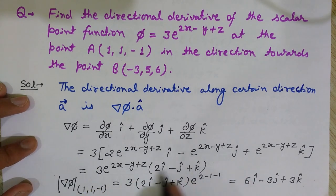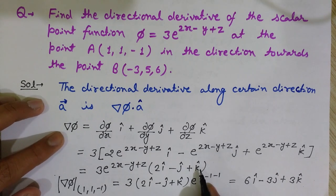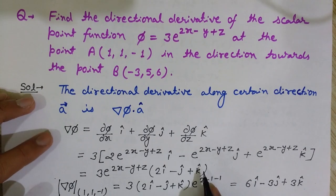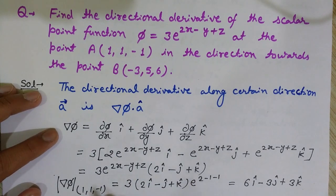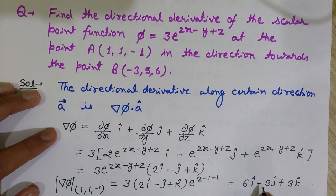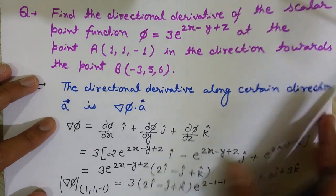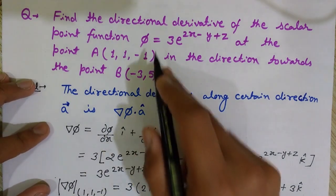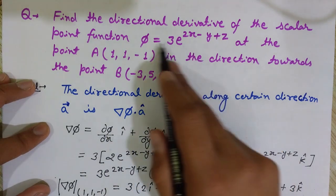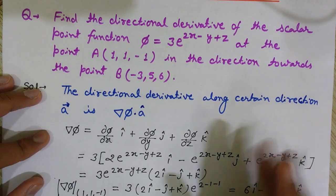Now we have the vector ∇φ, and we want to evaluate this gradient at point A(1, 1, -1). Substituting x = 1, y = 1, z = -1 into the expression gives the gradient vector: 6î - 3ĵ + 3k̂. This vector is actually normal to the scalar surface, but now we need the directional derivative in the direction of AB.